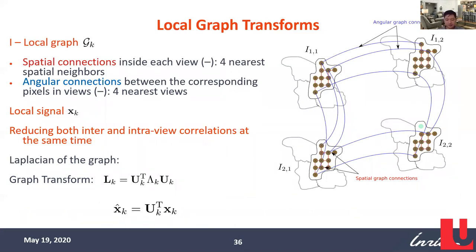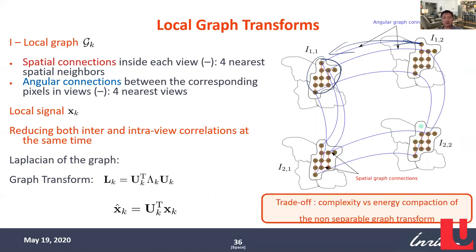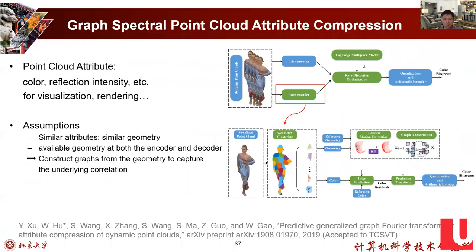To reduce complexity, the transform can be separated into the spatial domain and the inter-sub-aperture-image domain, enabling more efficient algorithms instead of one very large transform. Fast graph transform remains an active area of research, because even though graph transforms can be proven optimal, implementing them quickly is still a challenge.